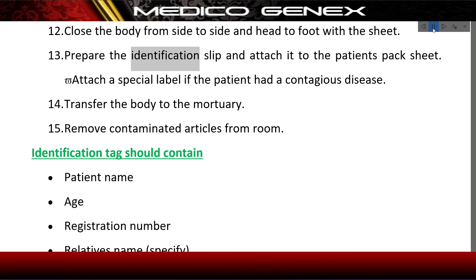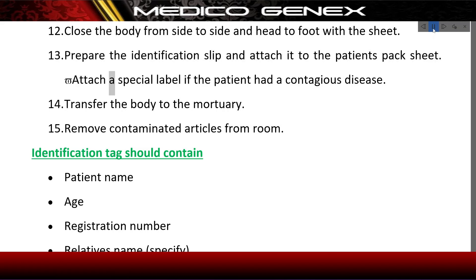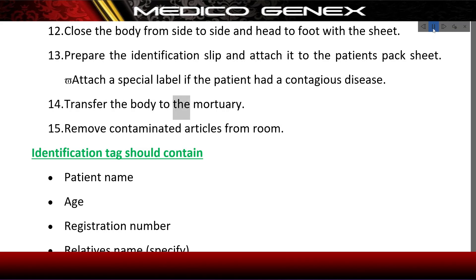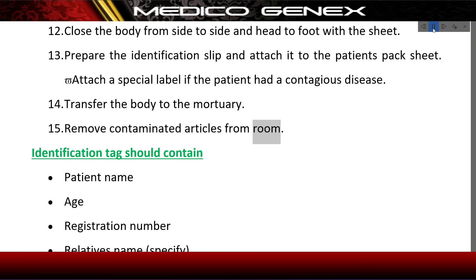Prepare the identification slip and attach it to the patient's pack sheet. Attach a special label if the patient had a contagious disease. Transfer the body to the mortuary. Remove contaminated articles from the room.